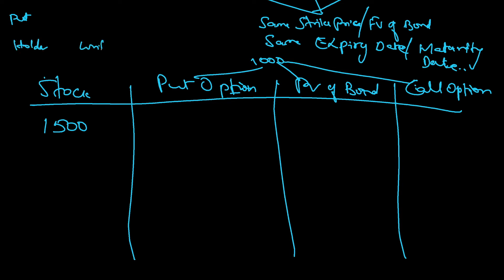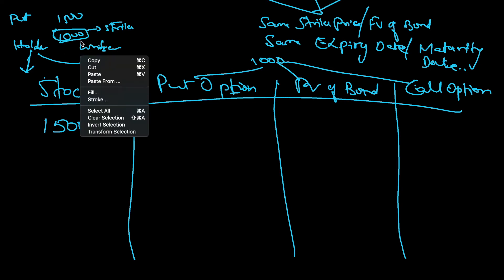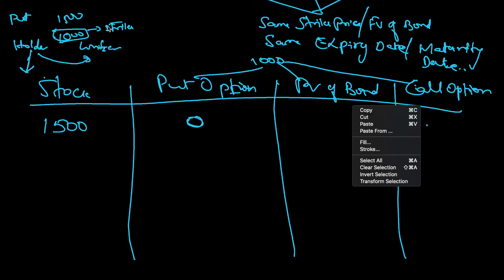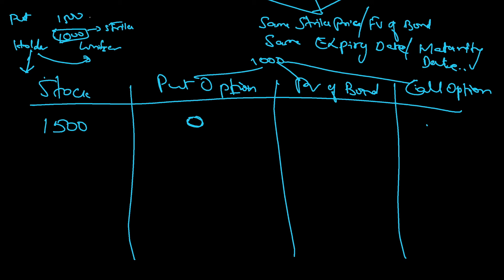For the put option: the strike price is 1000 and the stock price is 1500. The put option holder will let the contract expire because you get benefit only if the spot price is less than 1000. So the put option price will be zero. For the call option, the holder is bullish and will get a benefit of 500. So on the expiry date, call option value = 500, bond value = 1000. This gives us: 1500 + 0 = 1000 + 500 = 1500. The formula holds.